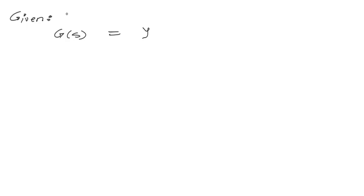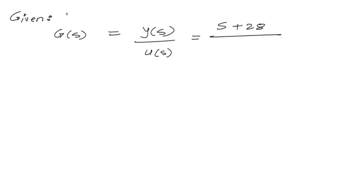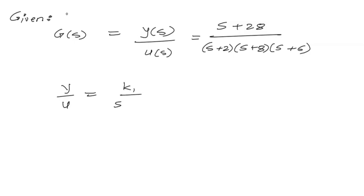In this question, we have been given that G is equal to Y divided by U, which is then equal to s plus 28, divided by (s plus 2) multiplied by (s plus 8) multiplied by (s plus 6). Now, by applying the canonical variable method, we get Y divided by U is equal to k1 divided by (s plus 2), plus k2 divided by (s plus 8), plus k3 divided by (s plus 6).